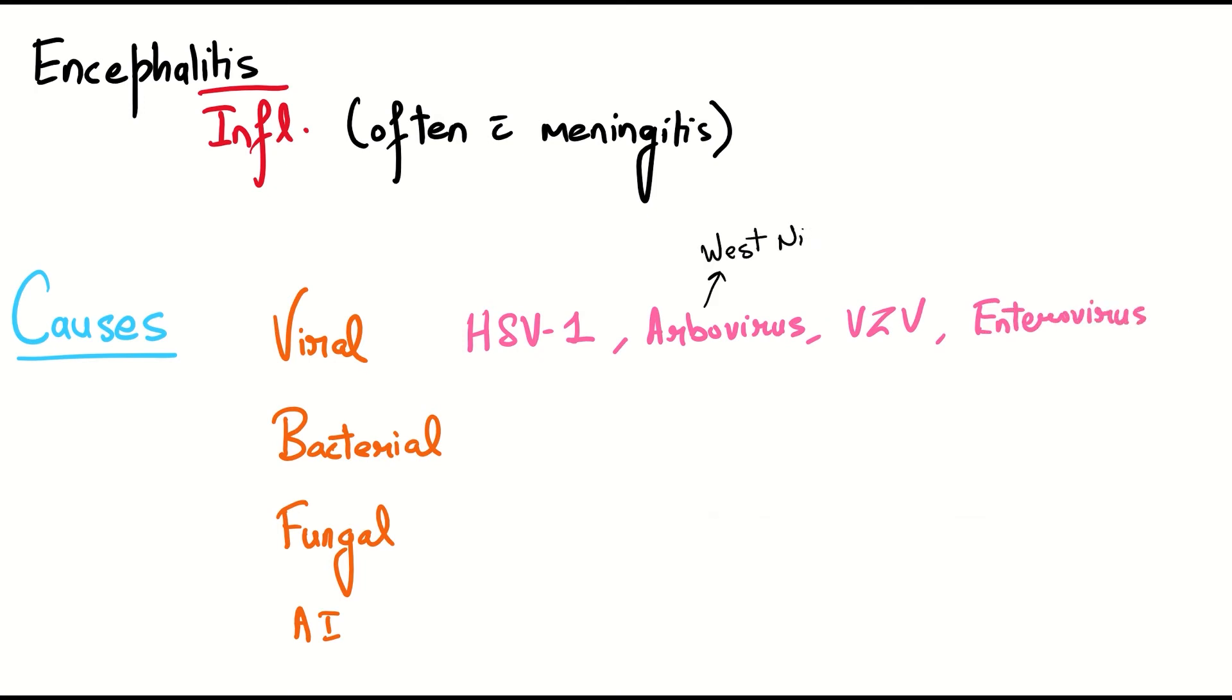Among the arbovirus, West Nile virus is most prominently associated with encephalitis and enterovirus includes polio. Herpes simplex is the most common sporadic cause of encephalitis while arbovirus is the most common epidemic cause.